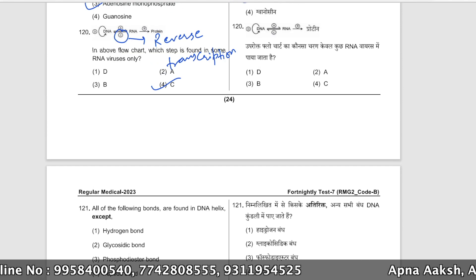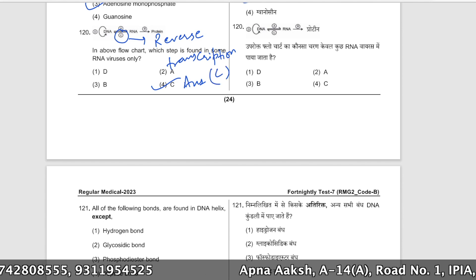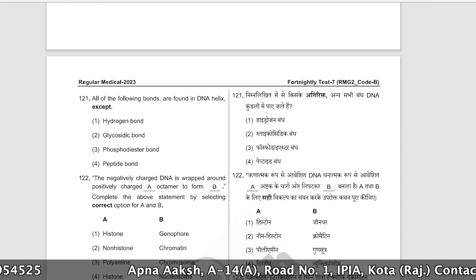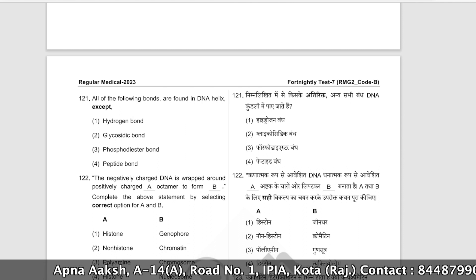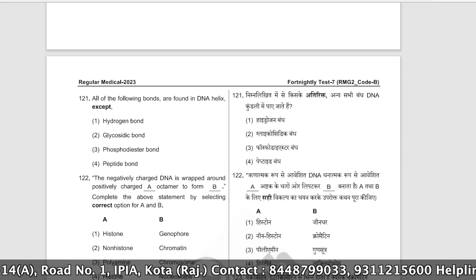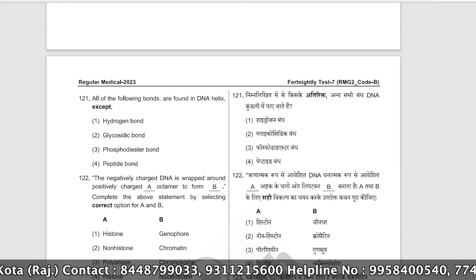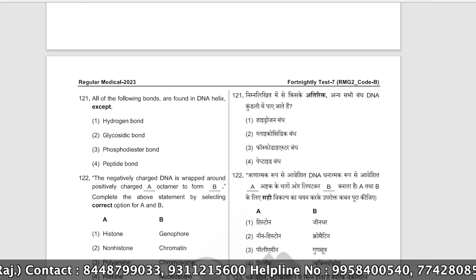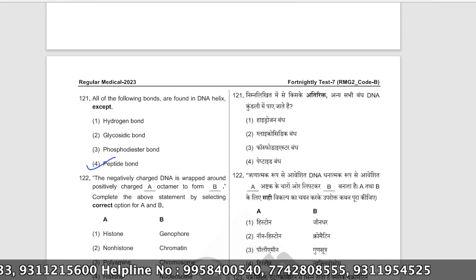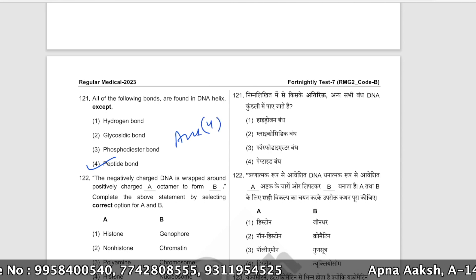All of the following bonds are found in DNA helix except one. The bond that is NOT found in DNA is the peptide bond — because peptide bonds are found among amino acids in proteins. The correct answer is option number C (peptide bond). DNA is negatively charged.